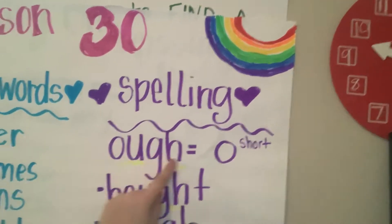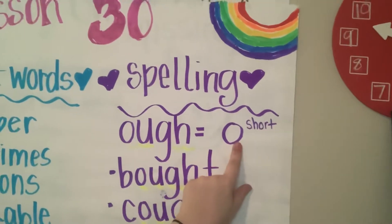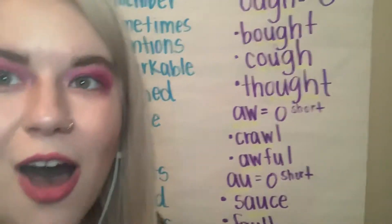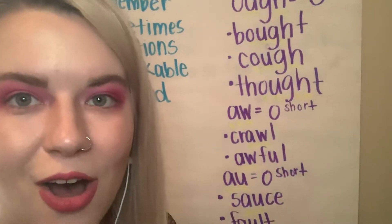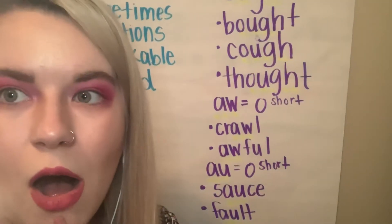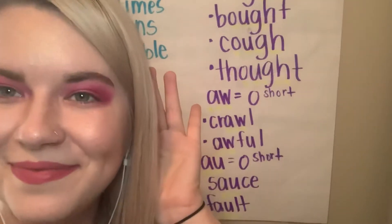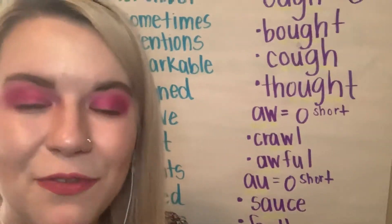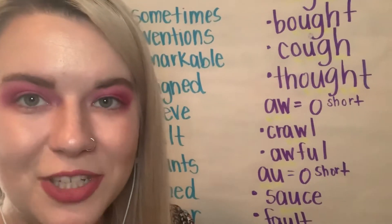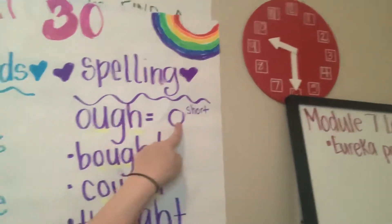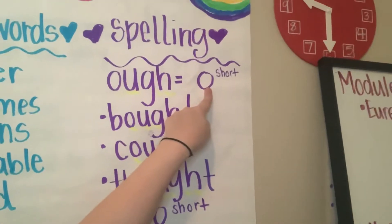Our spelling words — we're working on the short O sound. The 'ah' sound can be made in different letter combinations other than just the letter O. One way is O-U-G-H. It can make the 'ah' sound.